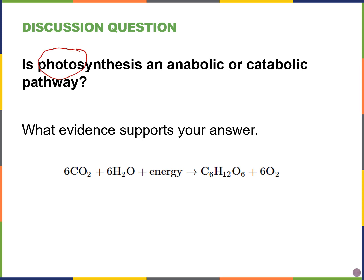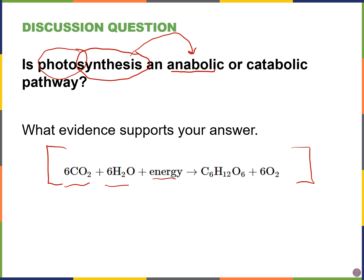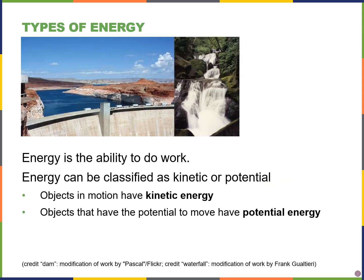What about photosynthesis? Using light energy to synthesize — the word 'synthesis' gives it away — that's going to be a building or anabolic reaction overall. If I look at the overall equation for photosynthesis, it supports that: I'm taking several carbon dioxide molecules, several water molecules, and energy from the Sun, and building a larger glucose molecule while releasing oxygen. So overall, photosynthesis is an anabolic reaction, and we'll see this in chapter eight.